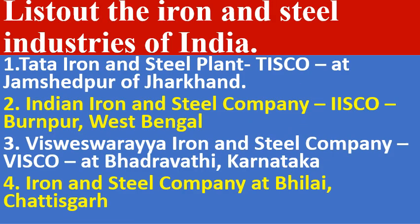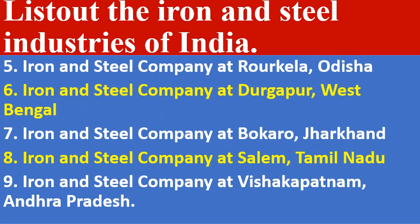List out the iron and steel industries of India. There are 8 major iron and steel industries: Tata Iron and Steel Plant (TISCO) at Jamshedpur, Jharkhand; Indian Iron and Steel Company (IISCO) at Burnpur, West Bengal; Vishweshwaraya Iron and Steel Company (WISCO) at Bhadravati, Karnataka — currently closed; iron and steel companies at Bhilai (Chhattisgarh), Rourkela (Odisha), Durgapur (West Bengal), Bokaro (Jharkhand), Salem (Tamil Nadu), and Vishakhapatnam (Andhra Pradesh).